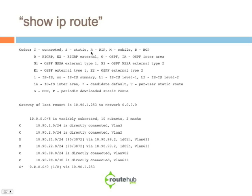The output shows: 'Gateway of last resort is 10.90.1.253 to network 0.0.0.0.' This reflects the default gateway this router will use. Below that are all the networks the router knows about. If the router is forwarding to a destination not listed in the table, it will forward the traffic to the default gateway at 10.90.1.253.